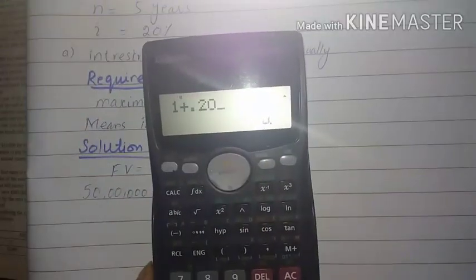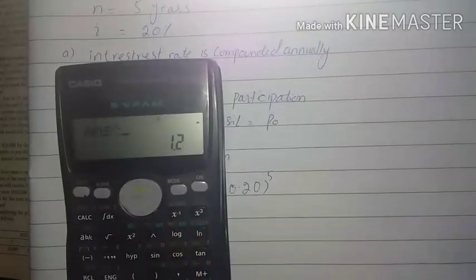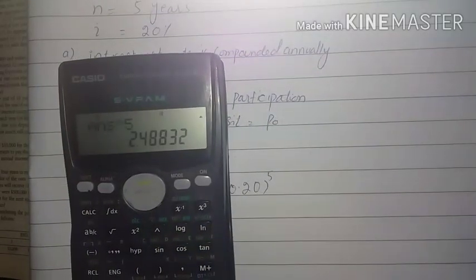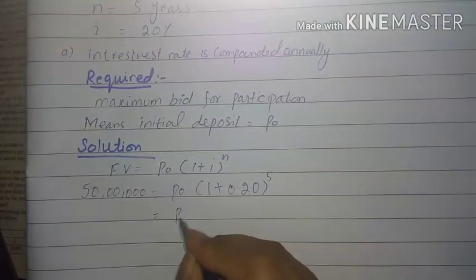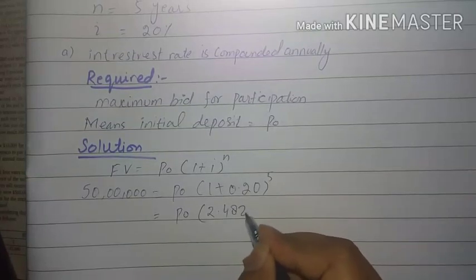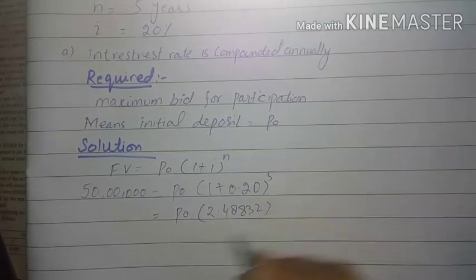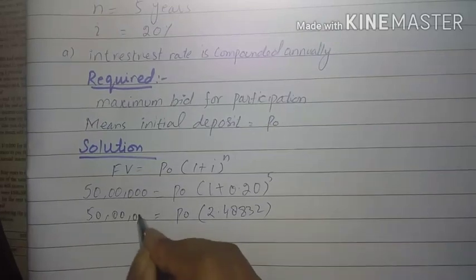We will do this calculation: (1 plus 0.20) raised to power 5. So the factor will be 2.48832. Therefore, P0 is equal to 50 lakhs divided by 2.48832.